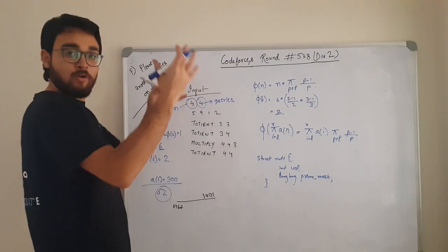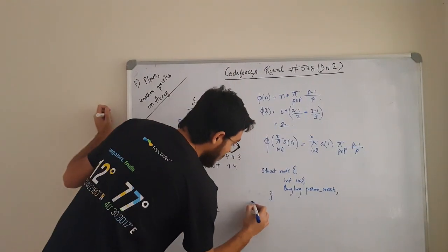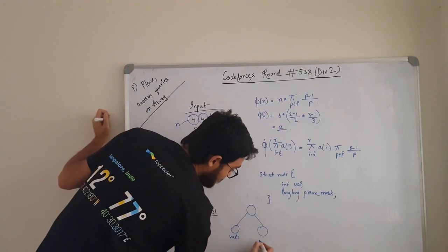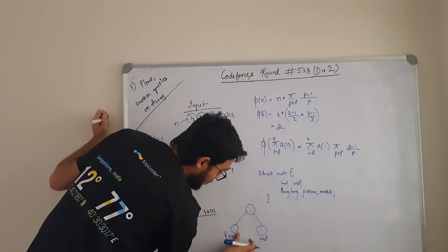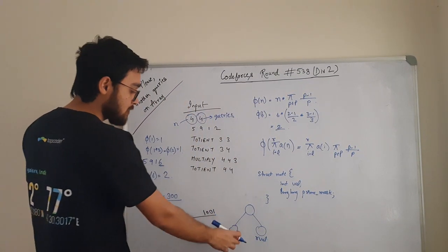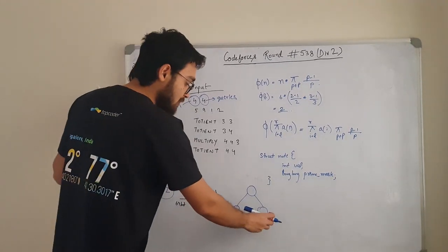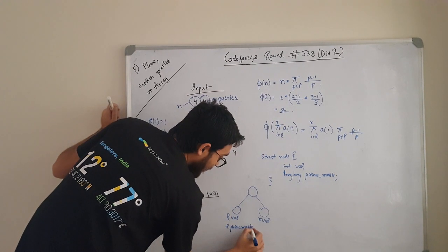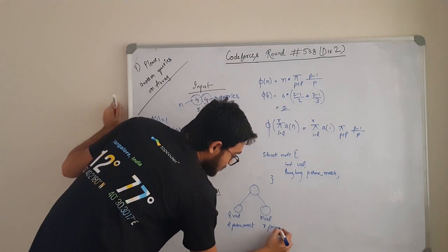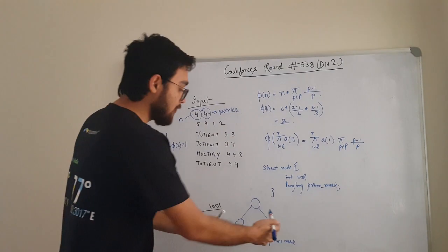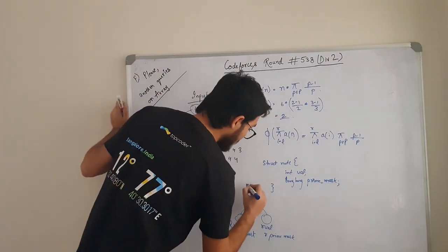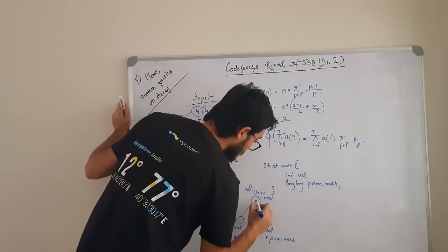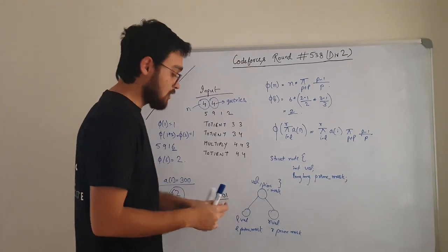Now, how we will be moving the information upwards? If this is my node, if I have value 1 and value 2, let us call this L_value and this R_value. This is the value in the left part and this is the value in the right part. Similarly, I will have L_prime_mask and R_prime_mask. Now we will push this value upward. We will get value and prime_mask here. How we will be calculating this? To calculate the value, we just need to multiply L_value with R_value.